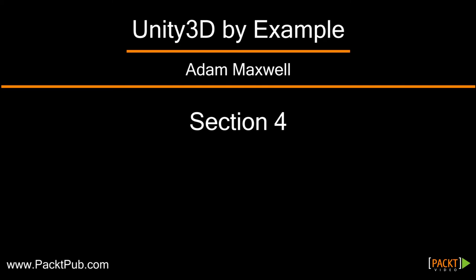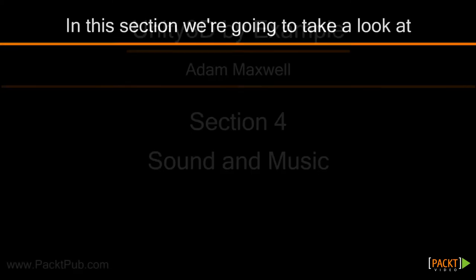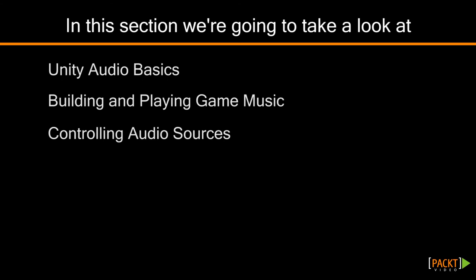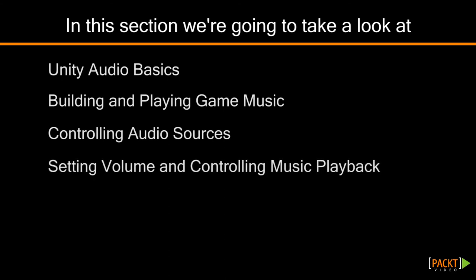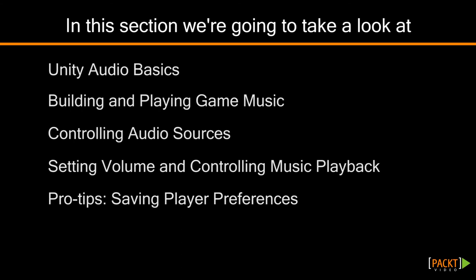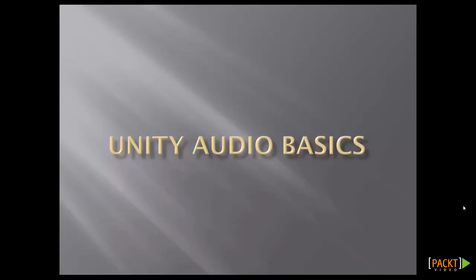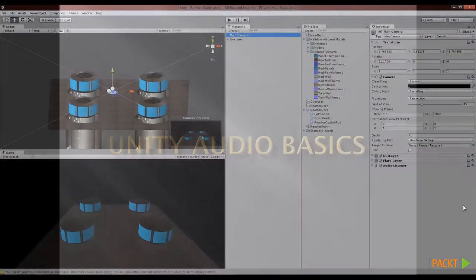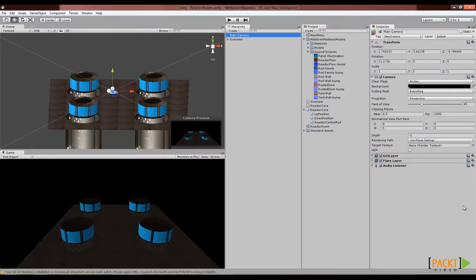Welcome to Section 4 of Unity 3D by Example, Sound and Music. In this section, we're going to take a look at Unity Audio Basics, building and playing game music, controlling 3D audio sources, setting volume and controlling music playback. And finally, in our Pro Tips section, we'll look at saving player preferences. Here we go! Our reactor cores are now behaving appropriately, but we still have no audio. We're halfway towards a finished game right now. You'll find that a game won't really feel complete until you have both sound and music. Fortunately, we can use Unity's built-in audio engine to easily implement both sound effects and music tracks.